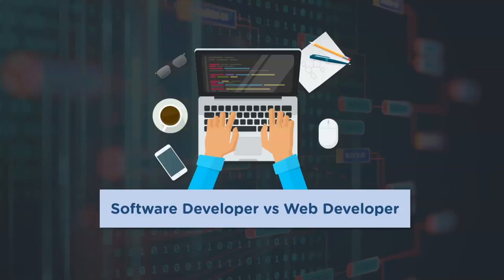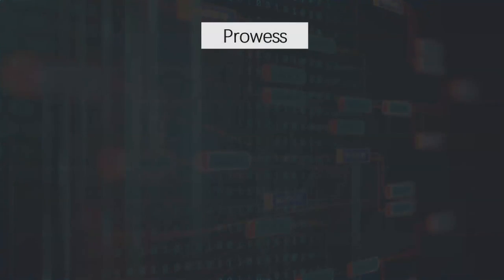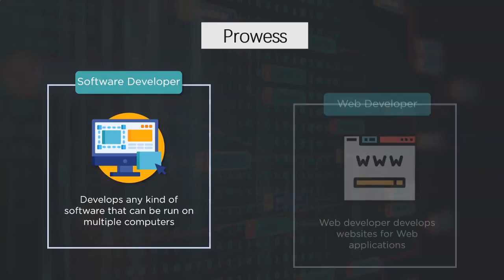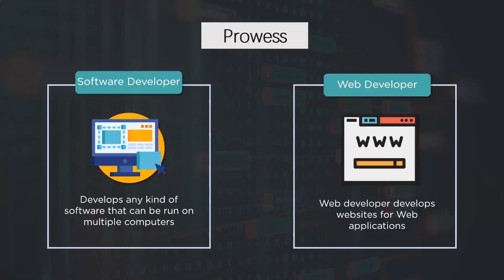Now moving on to the comparison — software developer versus web developer. First, let's compare based on prowess or area of expertise. A software developer is associated with developing products that can run on multiple systems — any kind of software. Their area of work includes requirement analysis, planning, coding, testing, implementation, deployment, and maintenance. Web developers are responsible for the development of websites, and they are also expected to follow the software development life cycle while building their products.